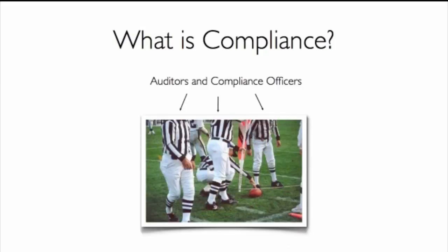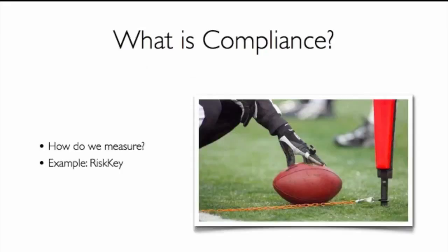Auditors and compliance officers can be thought of as those measuring progress along the field — determining whether the bank has achieved its first down or scored. These auditors and compliance officers will periodically throughout the year perform various reviews depending on the regulation or framework being measured. They also use tools to facilitate the process, similar to 'bringing out the chains' in football to measure whether the ball has advanced far enough. At the Garland Group, one example of such a tool is Risky.